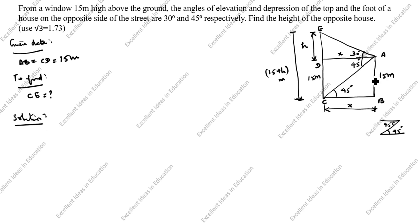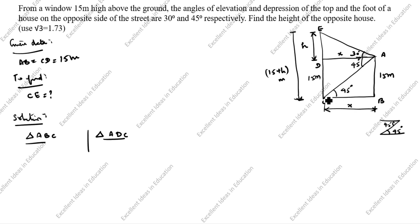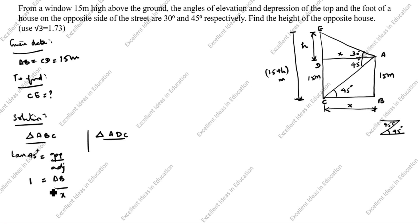Solution. First we take triangle ABC. The angle is 45 degrees, so tan 45 = opposite / adjacent = AB / x. Tan 45 is 1, and AB is 15, so 1 = 15 / x, giving x = 15 meters.